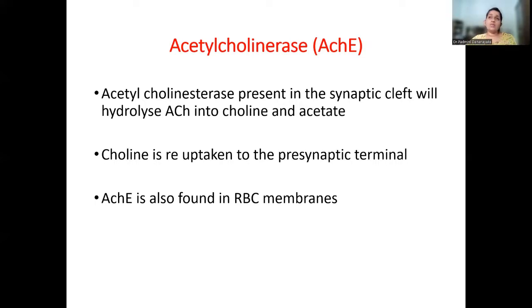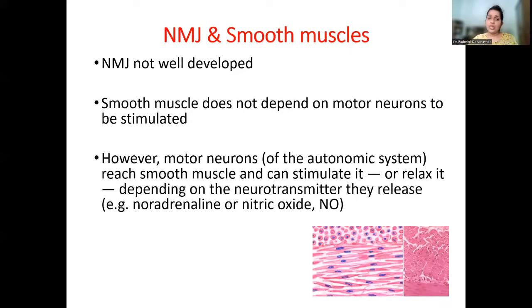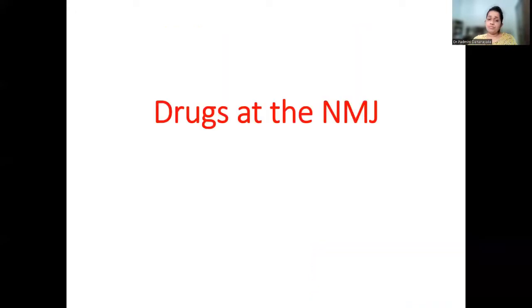Interestingly, acetylcholine is found not only in the pre-synaptic neurons of the neuromuscular junction but also in red blood cell membranes. Regarding smooth muscles, the neuromuscular junction is not well developed and smooth muscles do not depend on motor neurons to be stimulated — they are mainly dependent on the autonomic system. However, motor neurons of the autonomic system can reach smooth muscle and stimulate or relax it, depending on neurotransmitters released such as noradrenaline or nitric oxide.